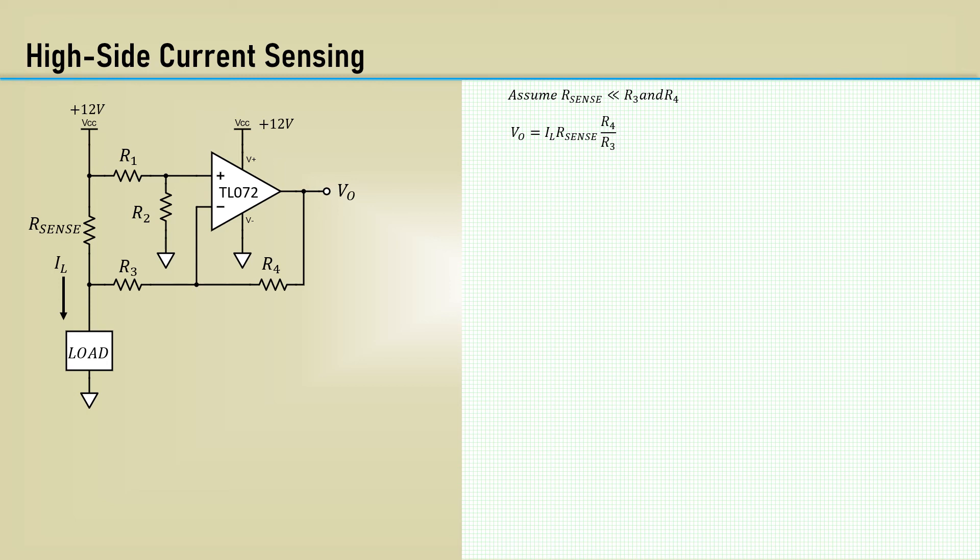And, of course, for a true differential amplifier, R1 equals R3 and R2 equals R4.